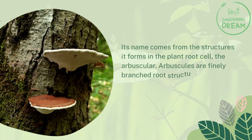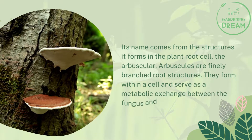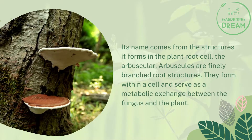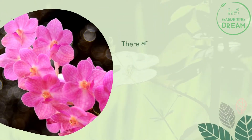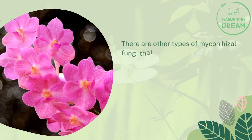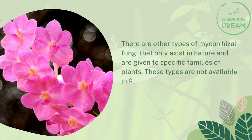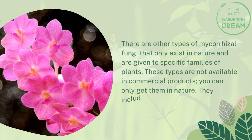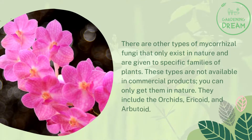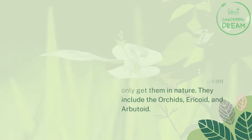Arbuscules are finely branched root structures. They form within a cell and serve as a metabolic exchange between the fungus and the plant. There are other types of mycorrhizal fungi that only exist in nature and are specific to certain plant families. These types are not available in commercial products — you can only get them in nature. They include the orchid, ericoid, and arbutoid types.